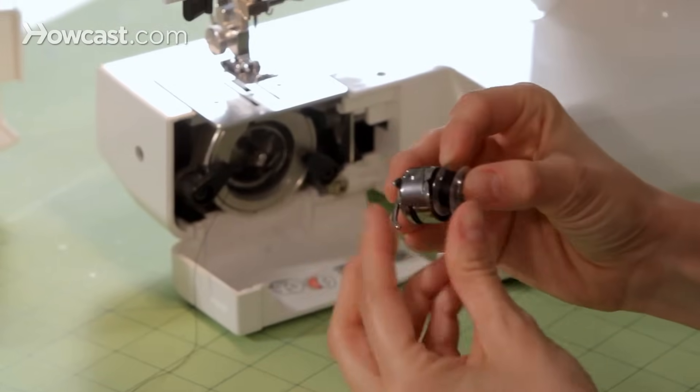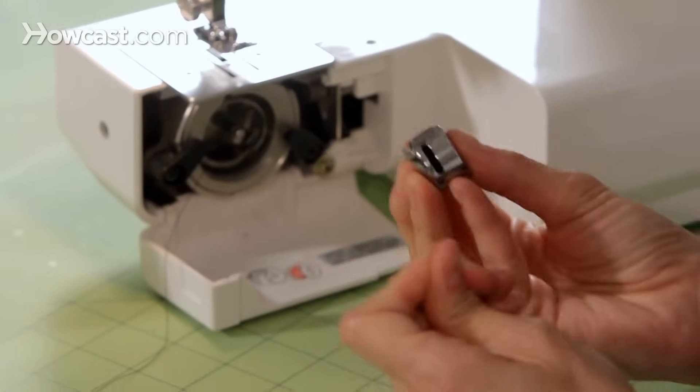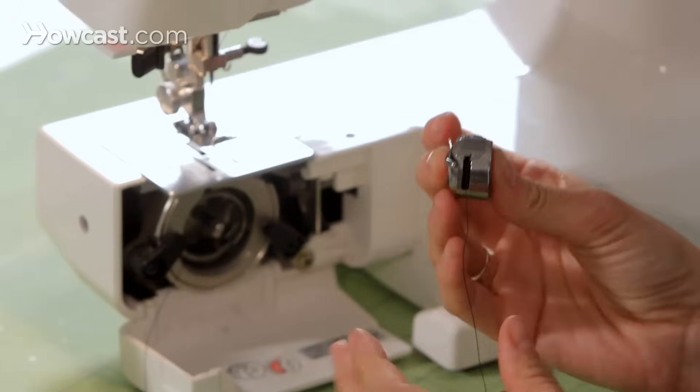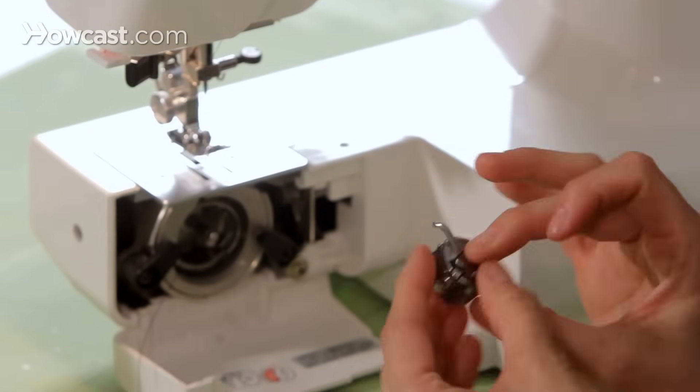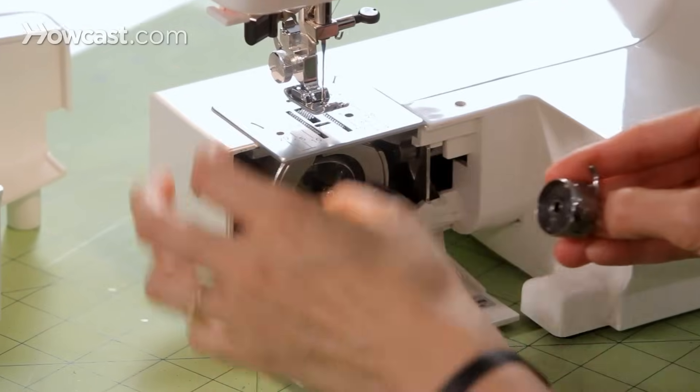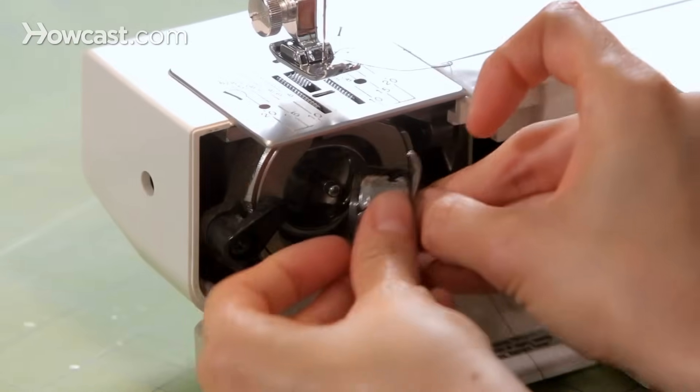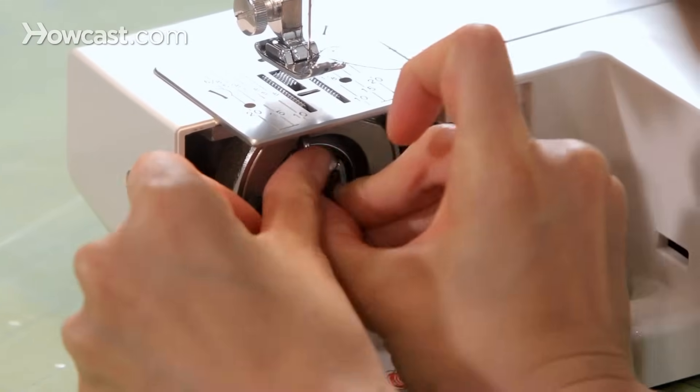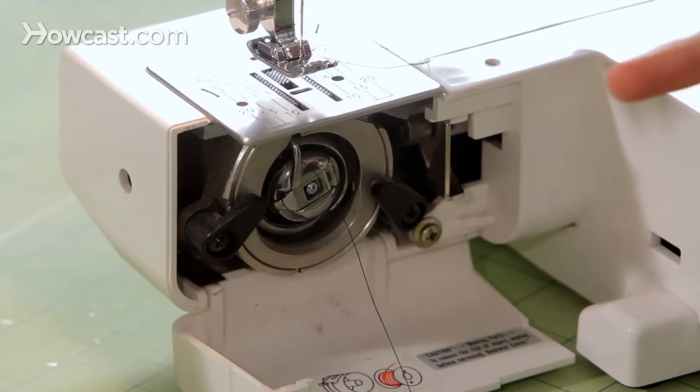Then put it back in, make sure everything is looking good. You can pull this, make sure everything is smooth. And then you can put your bobbin back in and start anew.